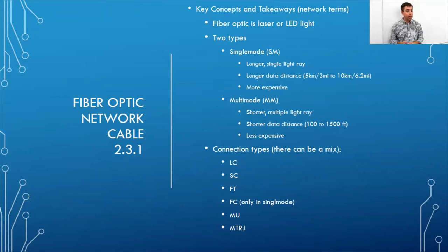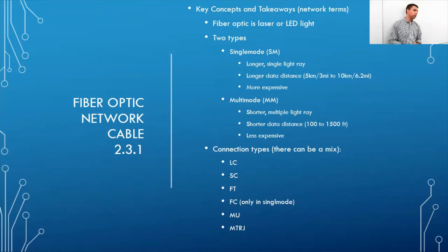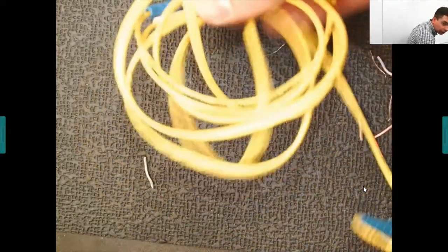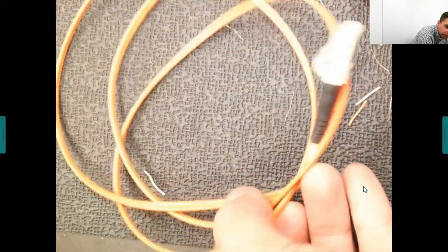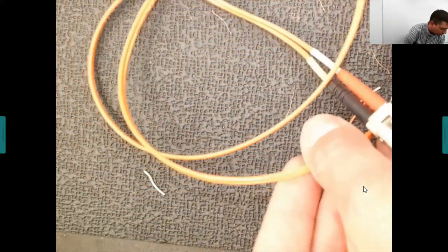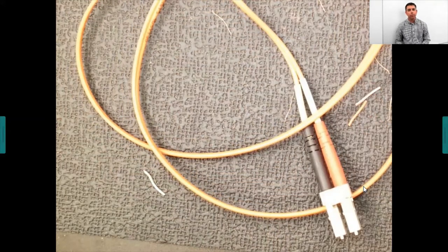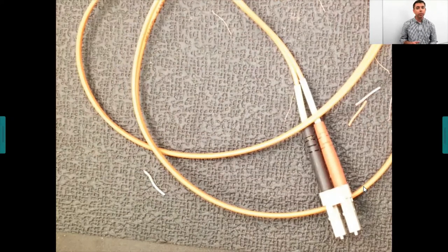Fiber connector types include LC, SC, FT, FC (single mode only), MU, and MTRJ. Visually, single mode cable is yellow and thinner because it uses a thinner glass tube. Multi-mode is orange and thicker in order to reflect multiple light signals.